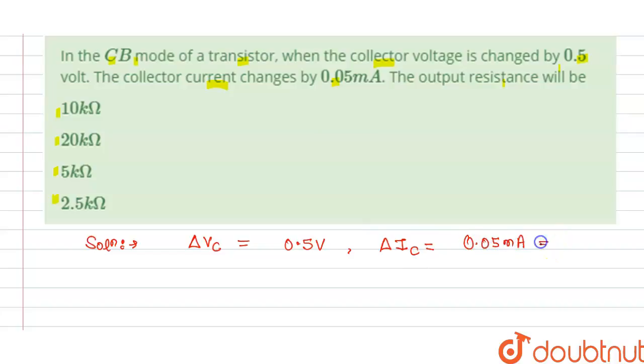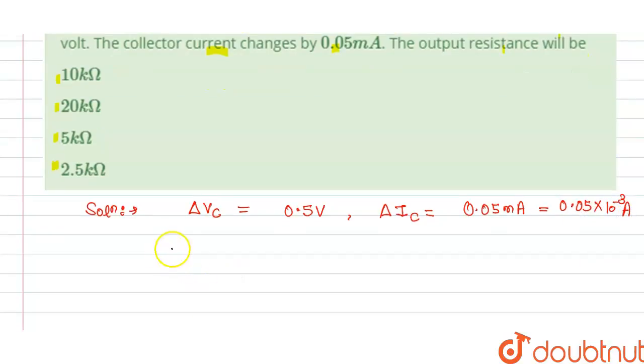So we can write this as 0.05 multiplied by 10 power minus 3 ampere. So we can say that output resistance is given by...